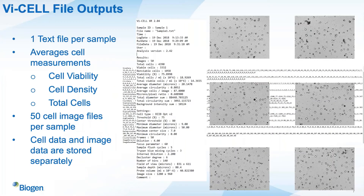Our Vi-CELL instruments have two file outputs. The first file is a numerical text file that contains two portions: a summary portion and a data array. The summary portion contains information about your sample name, the date and runtime, and a results section with summary averages and aggregated data for all experimental measurements performed — giving you total cells, cell viability, and cell density. The numerical data array portion contains all of the raw data collected per image. Additionally, our Vi-CELL instruments are set to generate 50 cell image files per sample, and the cell numerical data and image data are stored in separate file formats — a numerical text file and 50 TIFF images.